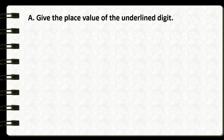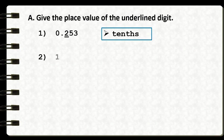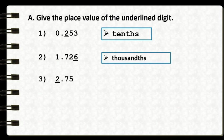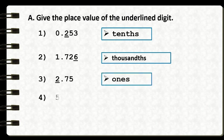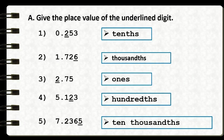For Activity A, give the place value of the underlined digit. Number one: 0.253 thousandths — the place value of 2 is tenths. Number two: 1 and 726 thousandths — the place value of 6 is thousandths. Number three: 2 and 75 hundredths — the place value of 2 is ones. Number four: 5 and 123 thousandths — the place value of 2 is hundredths. Number five: 7 and 2,365 ten-thousandths — the place value of 5 is ten-thousandths.